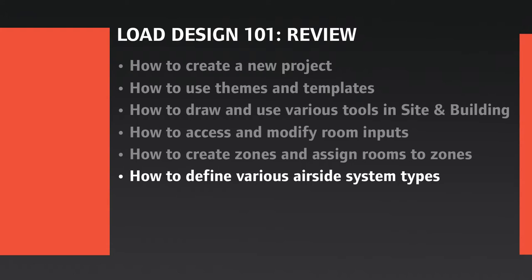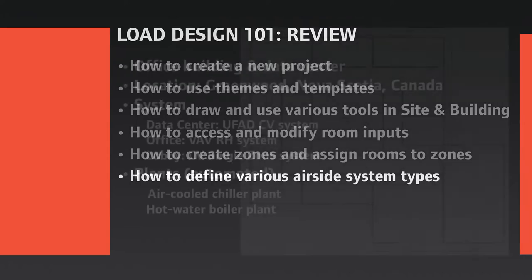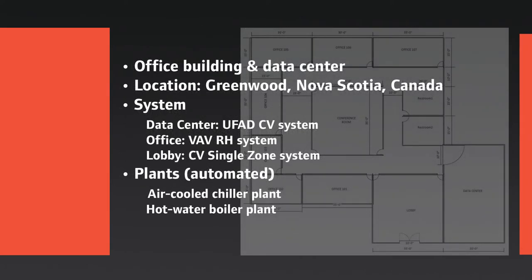You should also have learned how to create zones and assign rooms to those zones, and how to define various airside system types. We will now review where we left off in our example from the Load Design 101 training videos. We created an office building with a data center that has three mechanical systems: a constant volume underfloor air distribution system for the data center, a variable volume reheat system for the main office spaces, and a small single zone constant volume rooftop unit for the lobby.